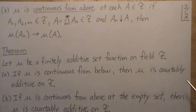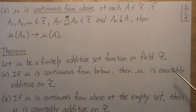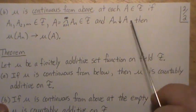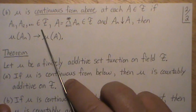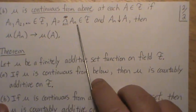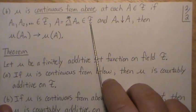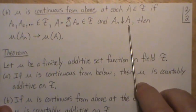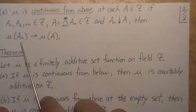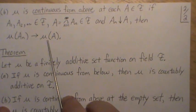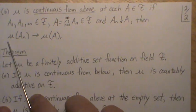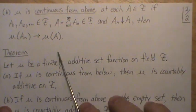When mu is continuous from above, it means for each A in the field, if the sets A1, A2 are all in the field and their intersection equals A — also in the field — and the sets decrease to A, then the limit of the measure of An limits to the measure of A, which says we can take that limit sign inside and it equals this.